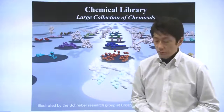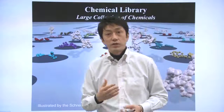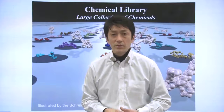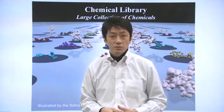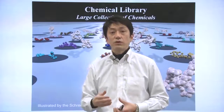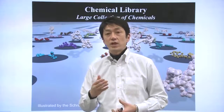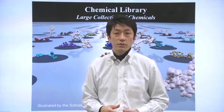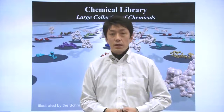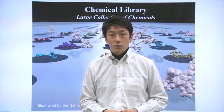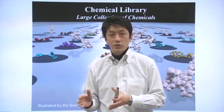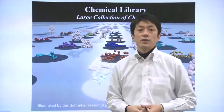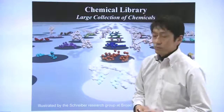For example, my own laboratory in Kyoto has a chemical library of 70,000 divergent molecules, including those that are not suited for drug discovery purposes. Libraries composed of highly divergent molecules are often preferred in chemical genetics.